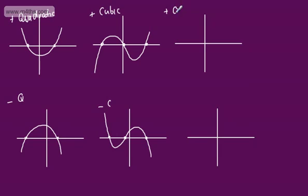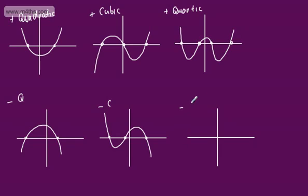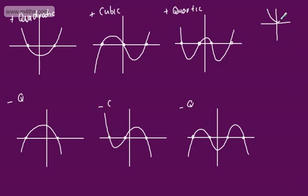We're now going to look at a positive quartic. I like to think of this as the McDonald's sign — that's what a quartic might look like. It might look like x squared, but often we'll have it looking something like so, and we will see a maximum of four points of intersection. A negative quartic will look something like so, and again we will see a maximum of four points of intersection. So if you look at a general quartic, x to the fourth is very similar to x squared, but these are just particular types.